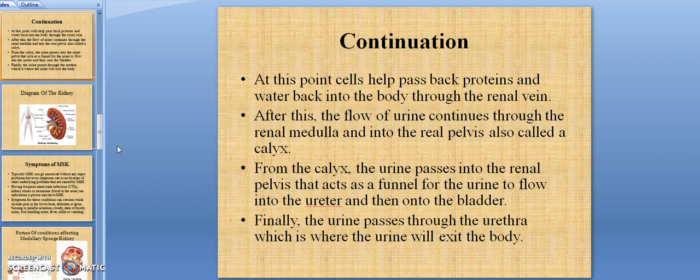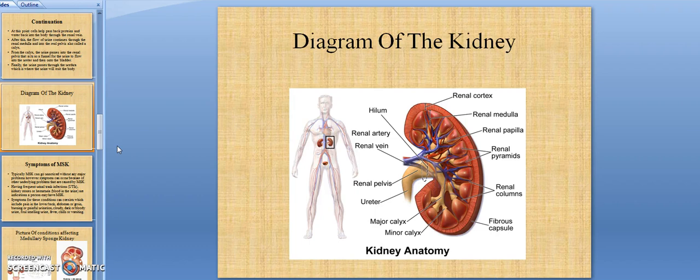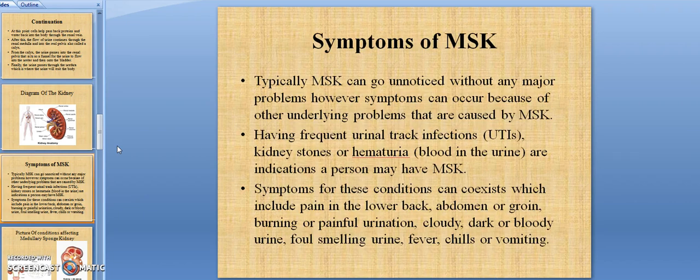From the calyx, the urine passes into the renal pelvis that acts as a funnel for the urine to flow into the ureter and then into the bladder. Finally, the urine passes through the urethra, which is where the urine will exit the body. Symptoms of MSK.